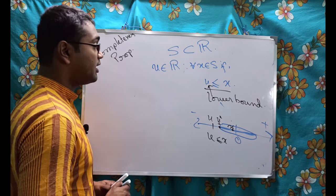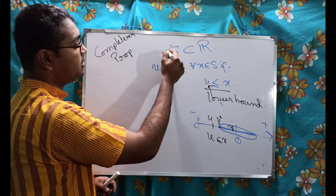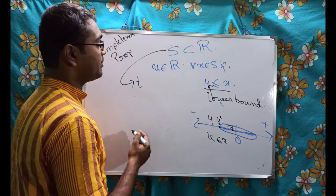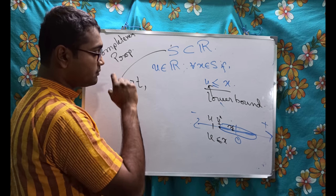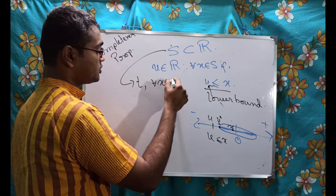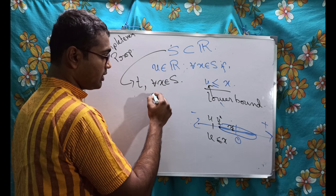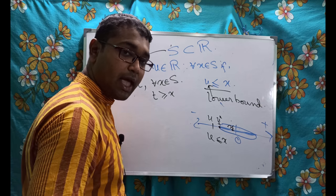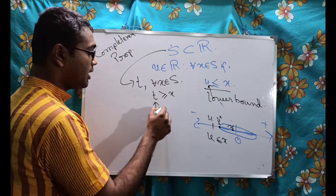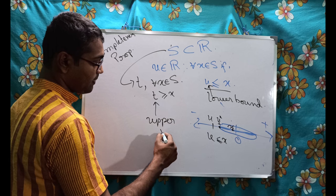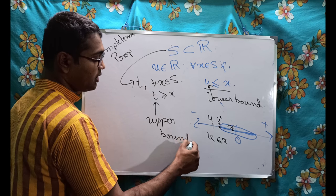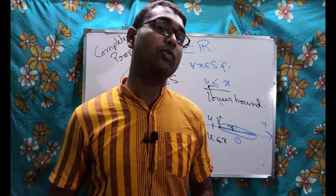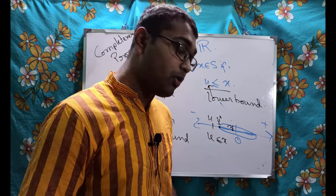Likewise, if for this S only, if there is one element T, and for all X belongs to this S, if T is greater or equal to X, if this thing happen, then we call T as upper bound and we say that S is bounded above. What does it mean?